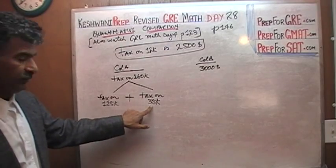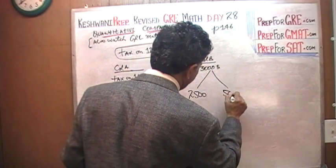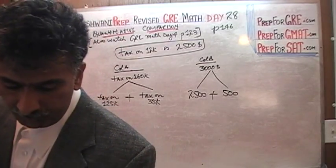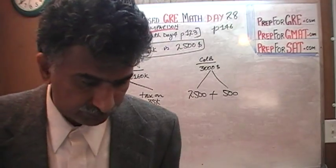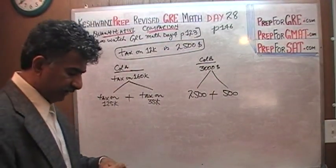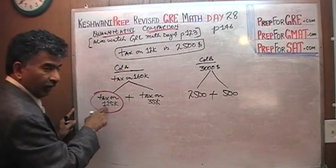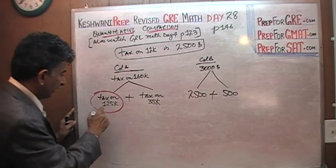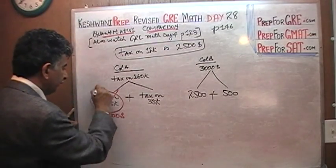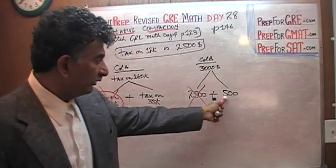Because 125 plus 25 is 150, plus another 10 makes 160. And $3,000 can be broken up into $2,500 plus $500. Why am I breaking up $3,000 into $2,500 and $500? Because the tax on $125,000 is $2,500 — so $2,500 appears in both columns and plays no role. Basically what we are being asked is to compare the tax on $35,000 versus $500.